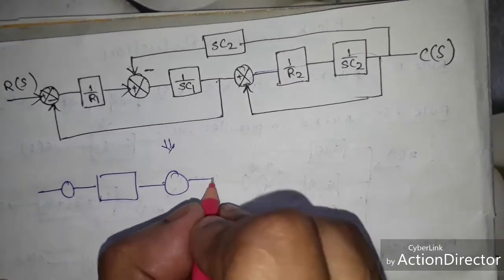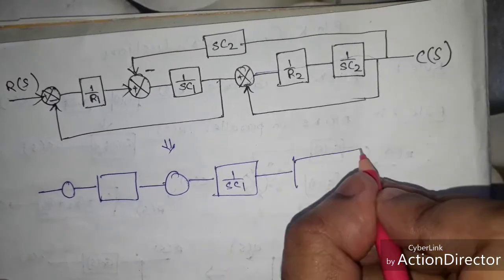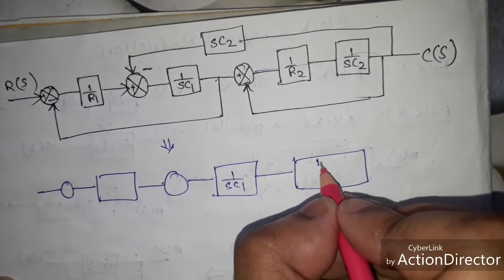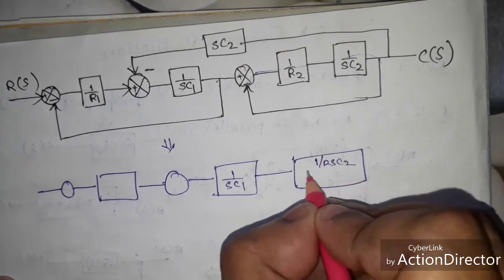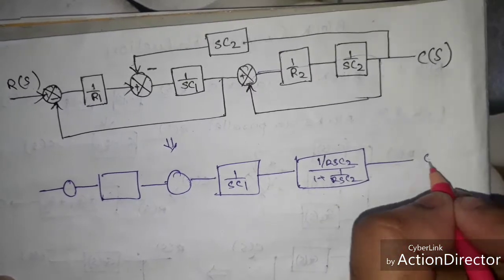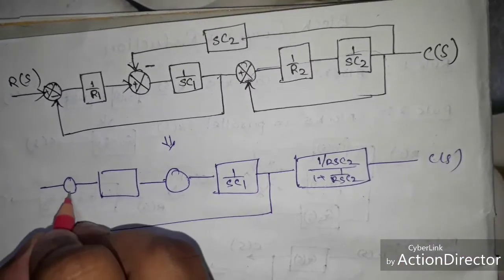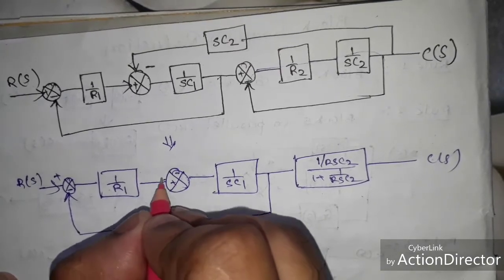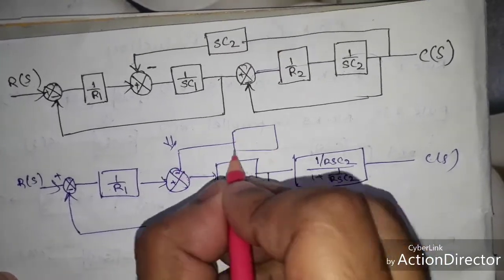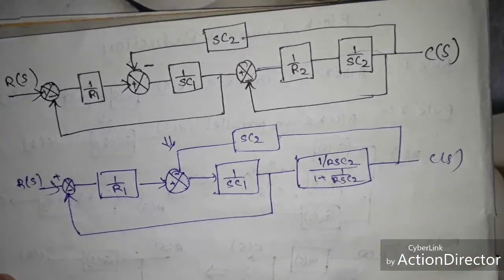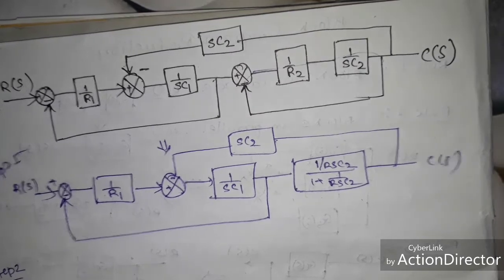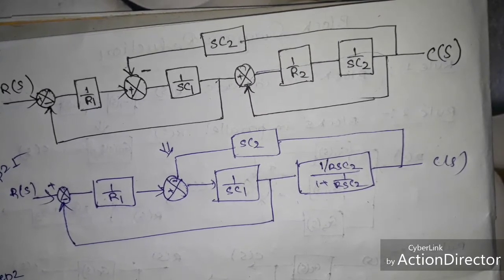First we do the reduction. We have 1/(sC1) and we convert it — the transfer function of the block is G(s) = (1/R2·C2) / (1 + 1/(R·s·C2)). This is the feedback. We have R(s), plus/minus 1/R1, plus/minus, and this will be 1/(sC2). From here you cannot proceed directly, so you have to remember the four rules. By using rule 4, we shift the takeoff point.